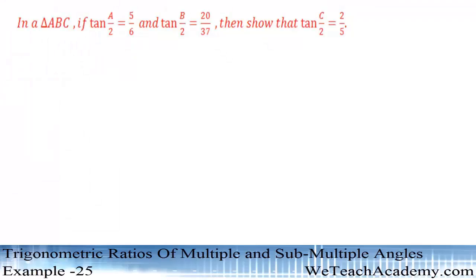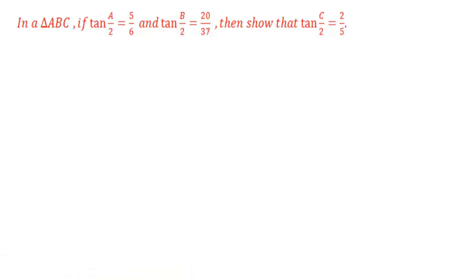Hey guys, welcome to Vtch Academy. In this section we are going to deal with an example. In a triangle ABC, if tan(A/2) is equal to 5/6 and tan(B/2) is equal to 20/37, then show that tan(C/2) is equal to 2/5.